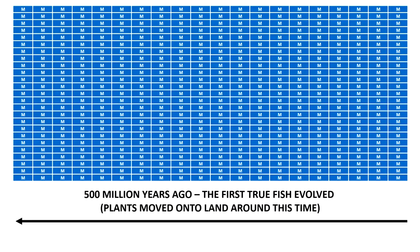The jumps at this point are getting very big, and it's becoming impossible to represent the little block of time that was 10,000 years of all human history. It would not be possible to show this dot on the current grid, which represents 500 million year blocks.